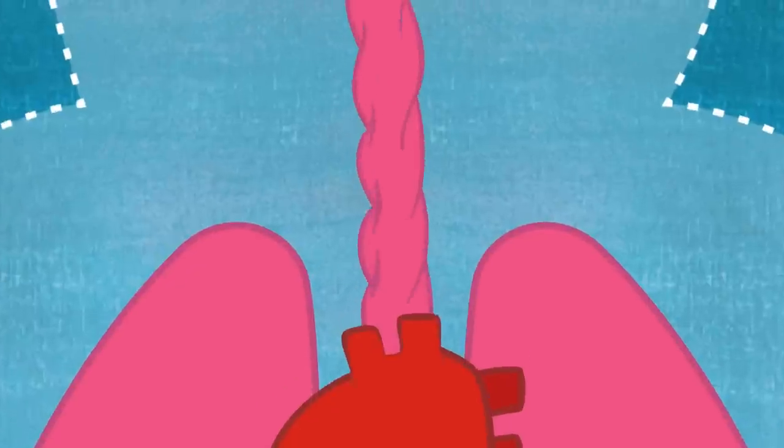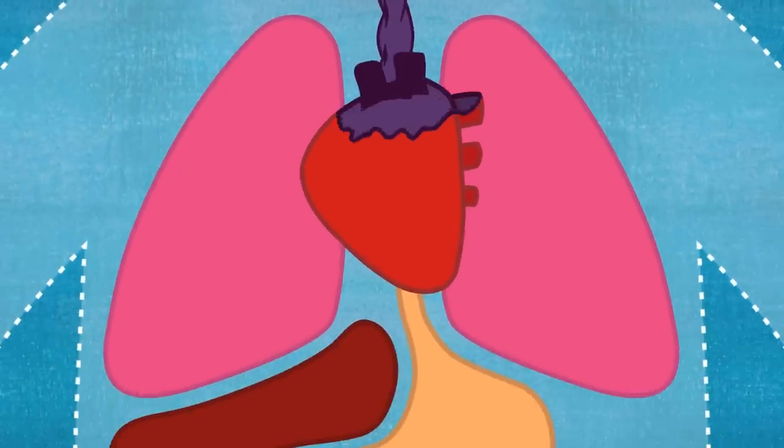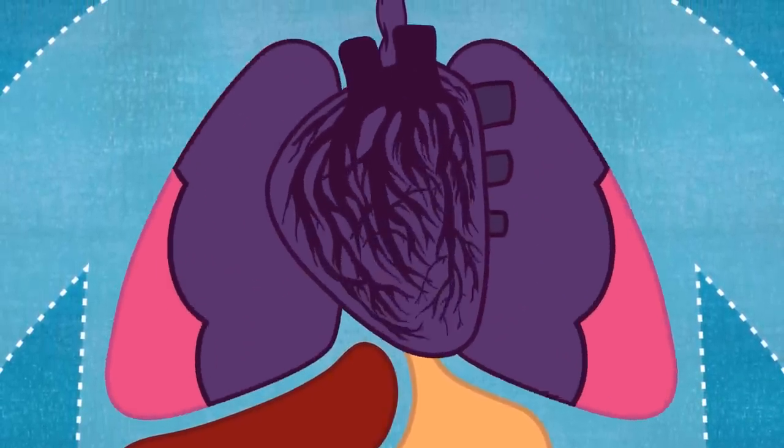First, your trachea tightens, which limits respiratory ability. Your heart enlarges, reducing blood flow. Muscle spasms constrict your lungs within minutes.